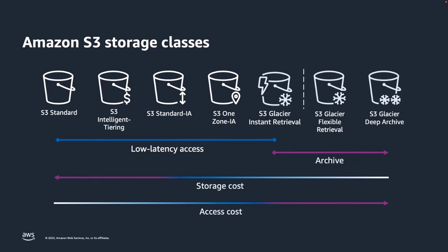For archive workloads, you can choose from three archive storage classes optimized for different access patterns and storage duration. The Amazon S3 Glacier storage classes are purpose-built for data archiving, providing you with the highest performance, most retrieval flexibility, and the lowest cost archive storage in the cloud. S3 Glacier Instant Retrieval provides the same low-latency access to data as the more active S3 storage classes and offers cost savings when compared to the infrequent access classes. A restore operation that can take minutes to hours is necessary to access data stored in the S3 Glacier Flexible Retrieval and S3 Glacier Deep Archive storage classes.